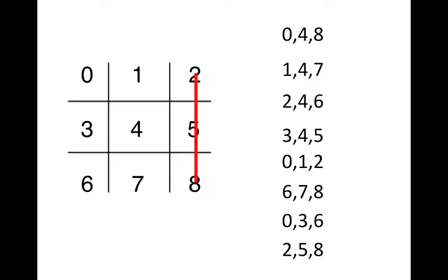There are more efficient ways to do this, but they get a little more complicated in terms of the code, which is not something I'm quite ready to have you do yet. So that's basically the series of checks you would make. If we're checking to see if player two, who does O, is the winner, you check each of these combinations to see if all three are equal to O, and if they are, that person wins.